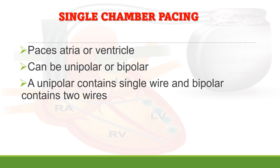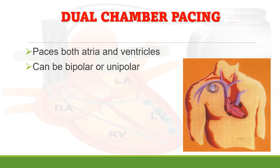In single chamber pacing, the lead is placed in either the atria or ventricle. This may be unipolar — containing a single wire — or bipolar, containing two wires. In dual chamber pacing, both atria and ventricles are paced and sensed simultaneously, and it can also be bipolar or unipolar.